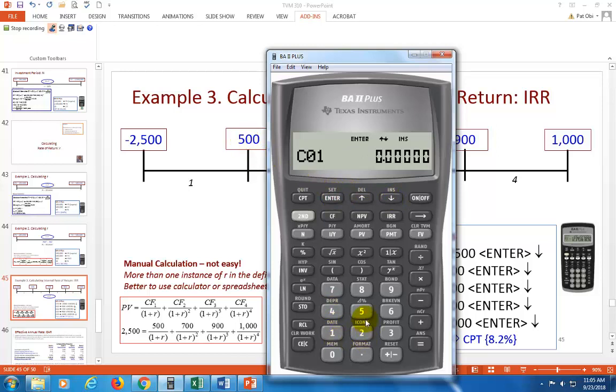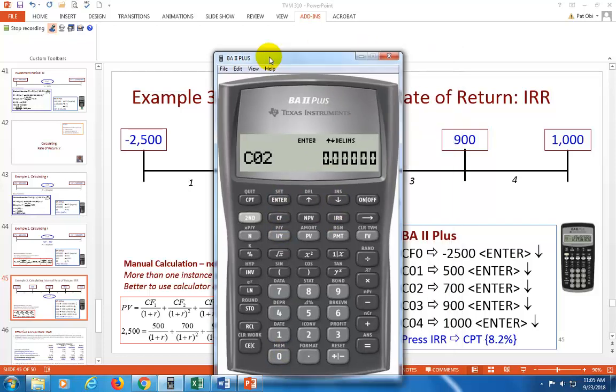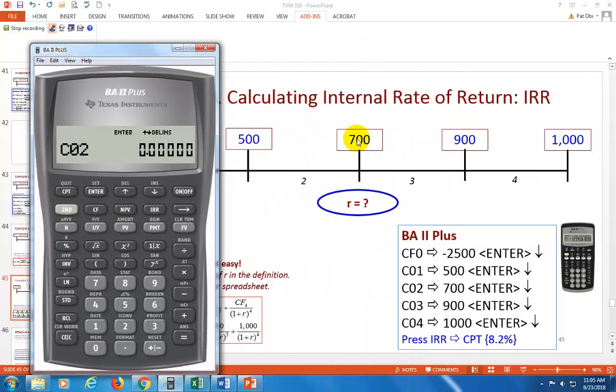You scroll down to C1. Your C1 is 500. So you enter, you scroll down to C2, C2 being the cash flow occurring at the end of the second period. Your guide is right there. So it's 700. Enter. Scroll down to C3. C3 is 900. Enter. And finally, C4 is 1,000. Enter.